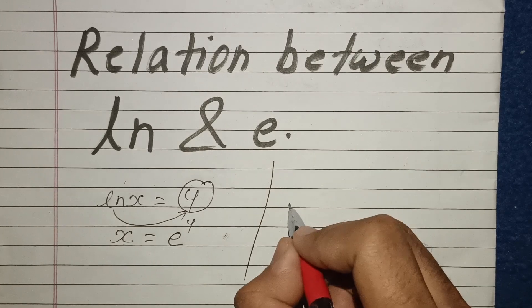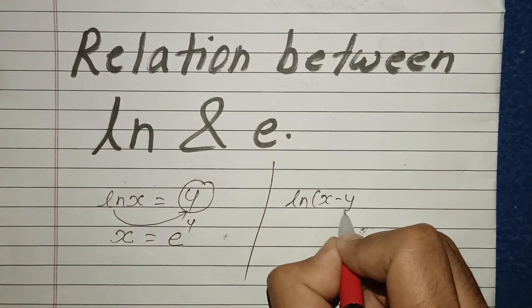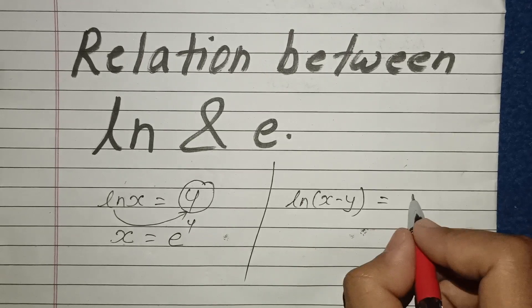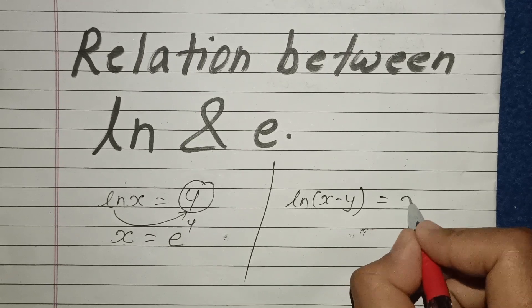Otherwise, look here another. ln of x minus y is equal to, if question asks us like that, x square.